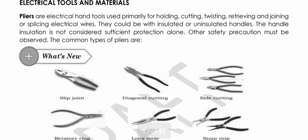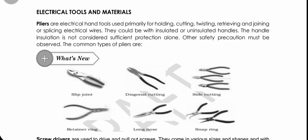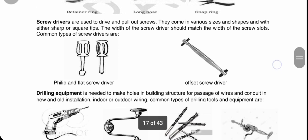In this part we're going to discuss the different types of tools commonly used in electrical work. First, we have pliers — electrical hand tools used primarily for holding, cutting, twisting, retrieving, and joining or splicing electrical wires. We use them for gripping and cutting. Types include slip joint, diagonal cutting, side cutting, retainer ring, long nose, snap ring, and alignment pliers.